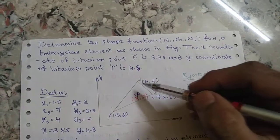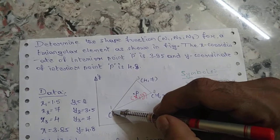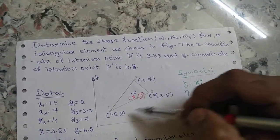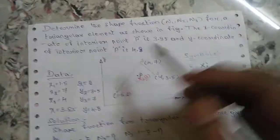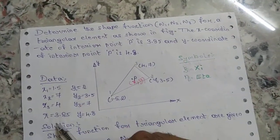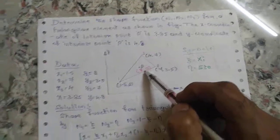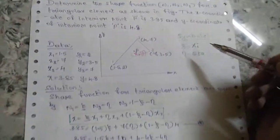These are the points: node 1, node 2, node 3, with coordinates x1 y1, x2 y2, x3 y3. Here I have written those points, and this is the interior point.